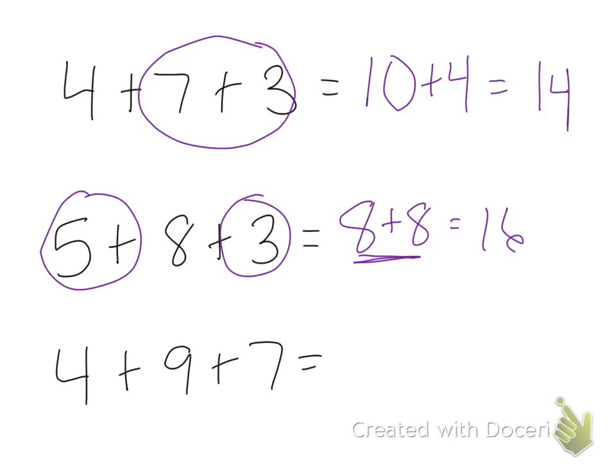On the last one, we could just add it in order. So we could do four plus nine and that's thirteen and then thirteen plus seven equals twenty.